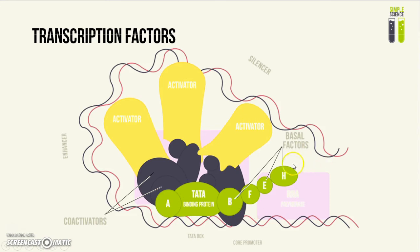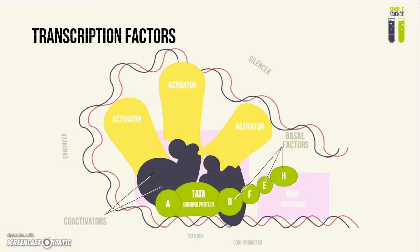All of the general transcription factors — also called basal transcription factors — are shown here. You may wonder why the RNA polymerase 2 enzyme can't just locate the promoter region by itself. It needs the help of the basal transcription factors to locate the promoter region. Furthermore, no significant quantity of mRNA molecules can be produced if only the RNA polymerase 2 enzyme were used.